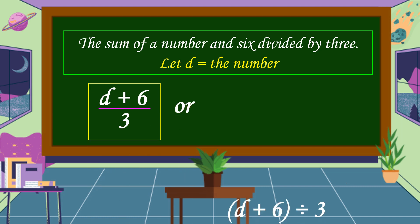Or we can write like this: D plus 6 over 3. This is D divided by 3.